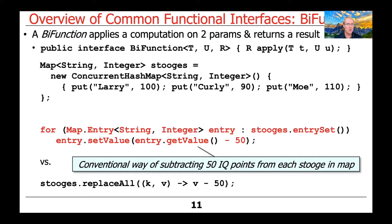We're going to show a couple of different ways to change the values in this Stooges map. The first way uses classic earlier Java features — specifically a Java for-each loop and the Map.Entry class. We say: for Map.Entry<String, Integer> entry : stooges.entrySet(). For each entry in that entry set, we take each entry in turn and set its value to be the current value minus 50, making the Stooges appear even less intelligent.